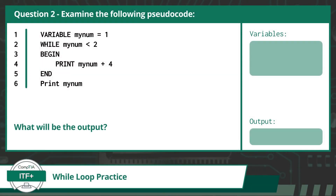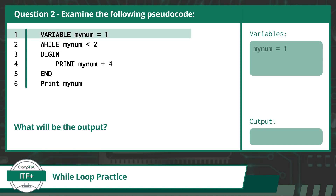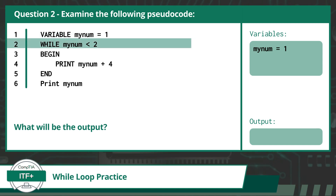Here is question 2. Examine the following pseudocode. What will be the output? If you want to try and solve this question on your own, pause this video now. Otherwise, I will go through the code line by line. In line 1, we declare a variable mynum and assign it the value of 1. On line 2, we see a condition statement for a while loop. Our condition statement calls for our program to check if mynum is less than 2. Since the value of mynum, which is currently 1, is less than 2, we will execute the code statements within the loop.